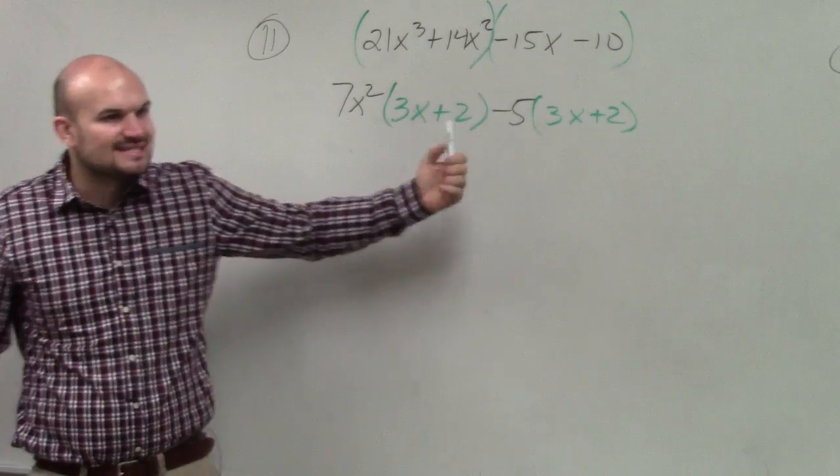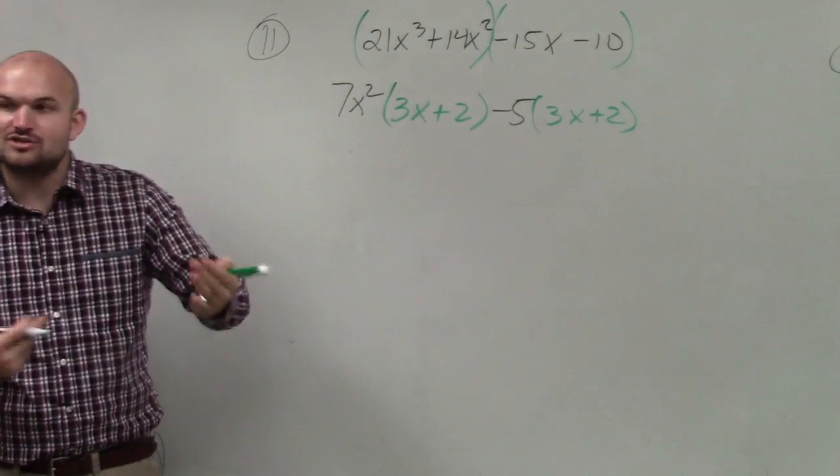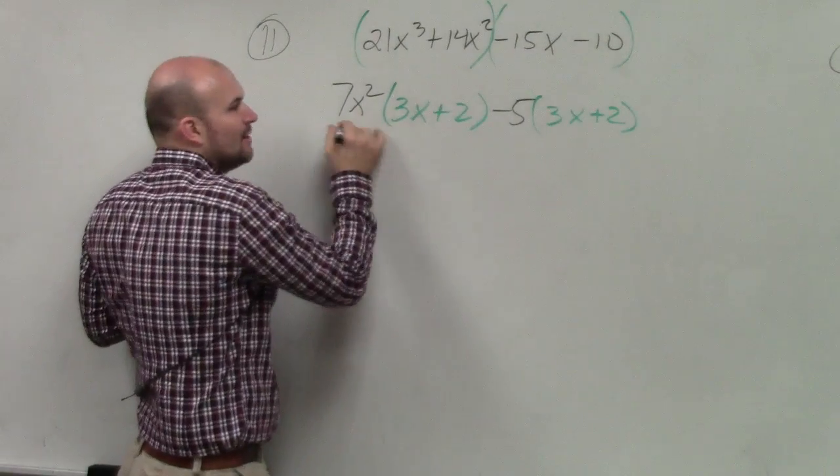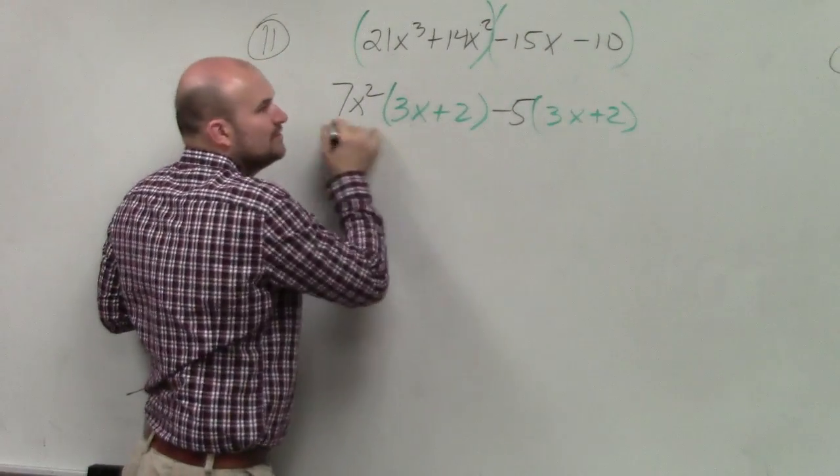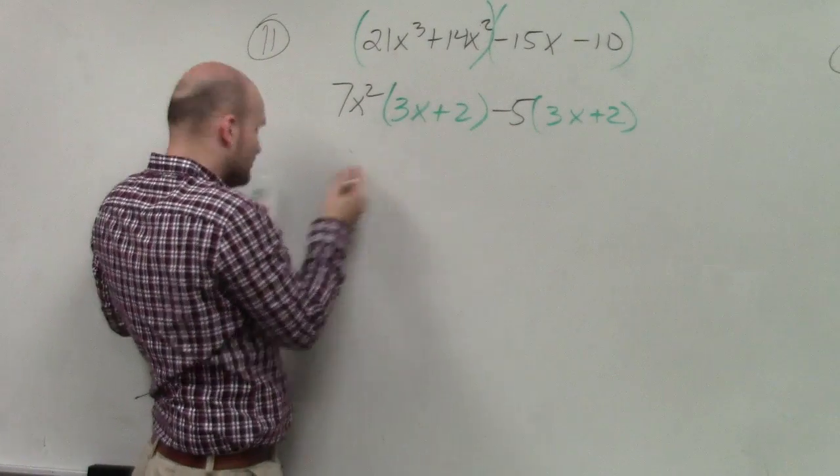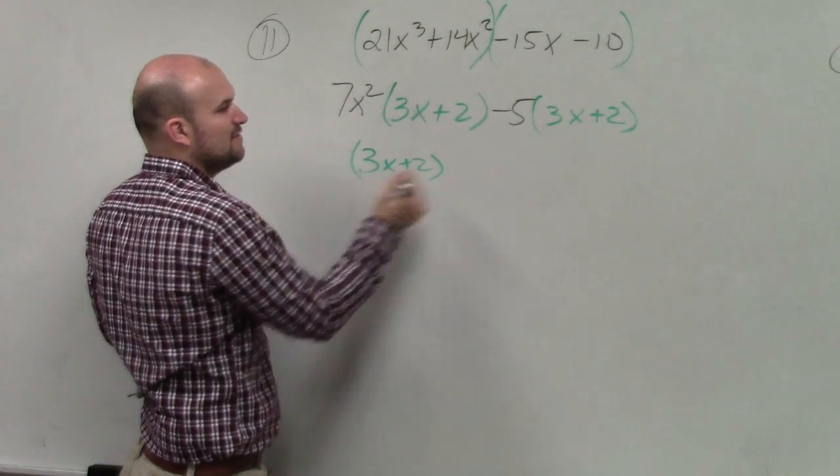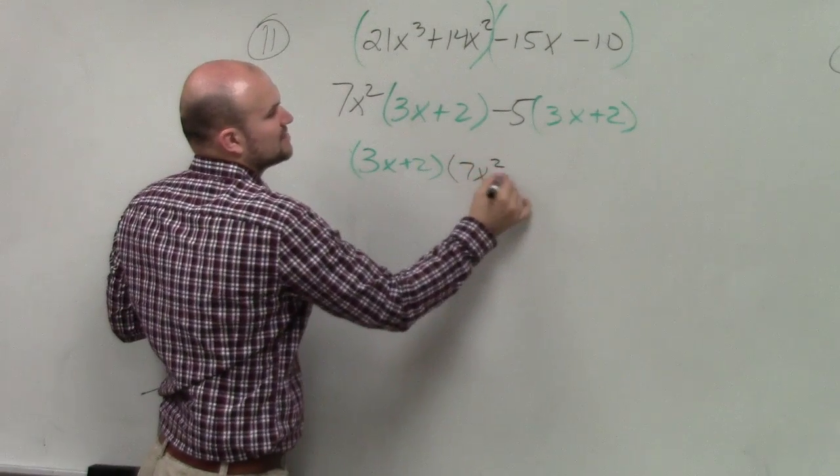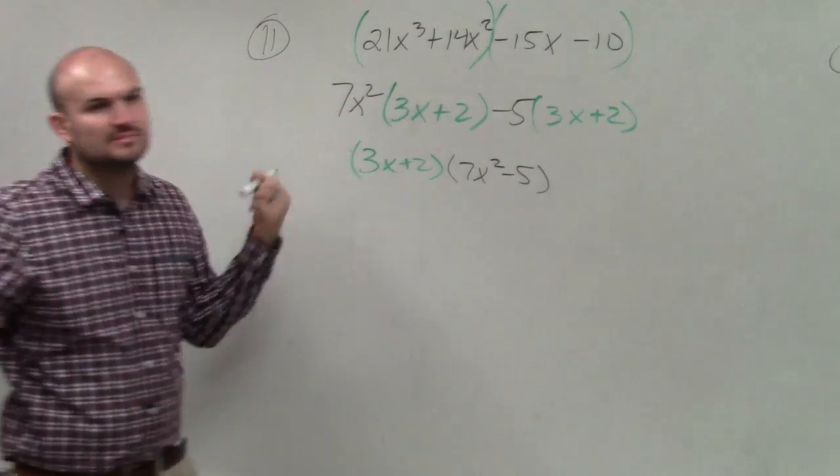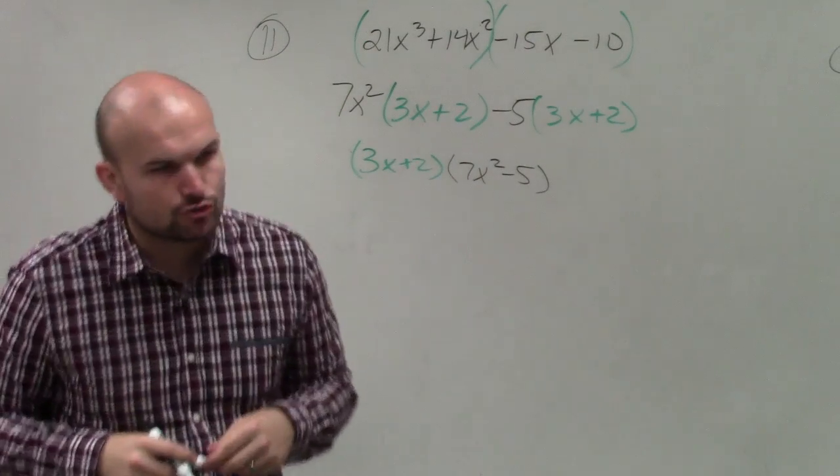So do you guys see how now, in my parentheses, this is exactly the same? So I can factor. So out of this expression and this expression, what do these two share? The 3x+2. So you factor out the 3x+2, and what are you left over with? 7x²-5. Done. That's called factoring by grouping.